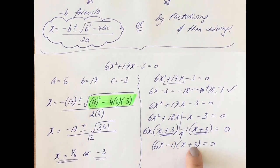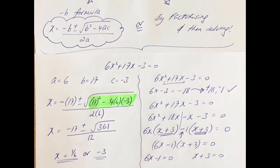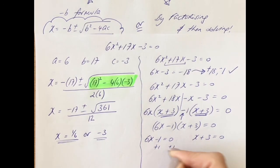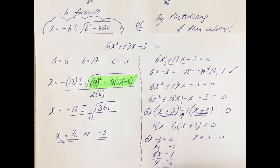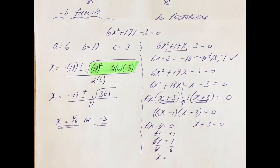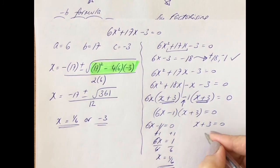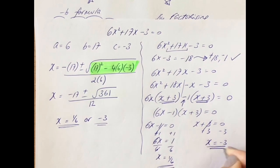Leave your equal 0 at the end, and then factorizing — pulling these together. 6x minus 1 is the first bracket, and x plus 3, the repeated bracket, is the second bracket. Two things are being multiplied to equal 0, which means either 6x minus 1 is equal to 0, or x plus 3 is equal to 0. We're going to add 1 to both sides and get 6x is equal to 1. Divide both sides by 6 and we get x is equal to 1 sixth — which is what we got over here. And minus 3 from both sides, and we get x is equal to minus 3.